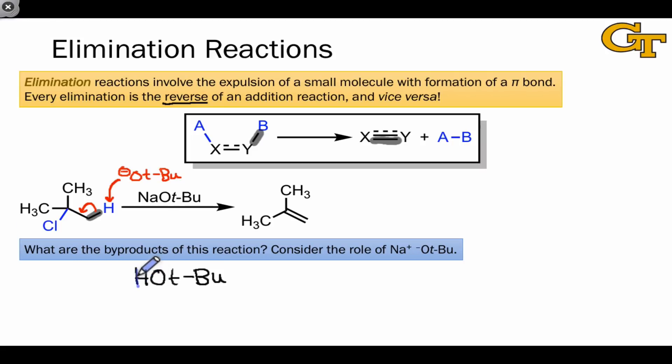Something had to happen to the chlorine as well, and for it to depart while leaving an octet of electrons at this carbon, it must have taken the electrons in the carbon-chlorine bond with it as it left. Thus, the other byproduct here is Cl-.